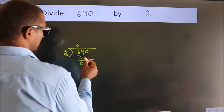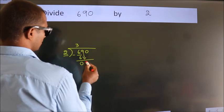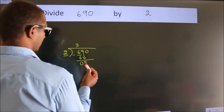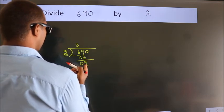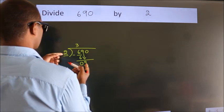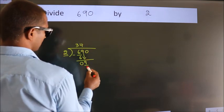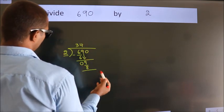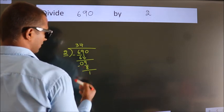After this, bring down the beside number. So 9 down. A number close to 9 in 2 table is 2 times 4 is 8. Now we subtract. We get 1.